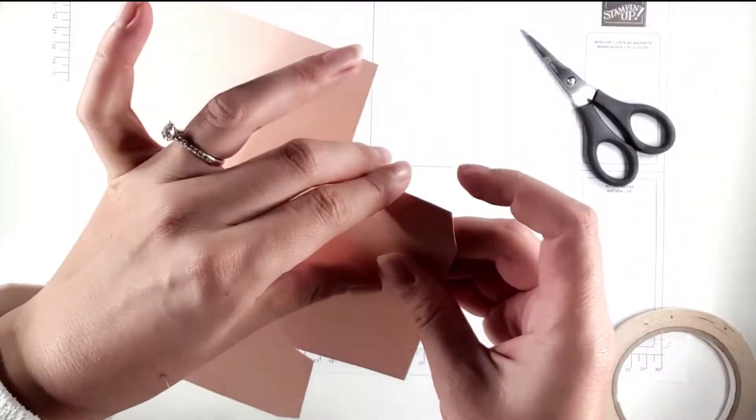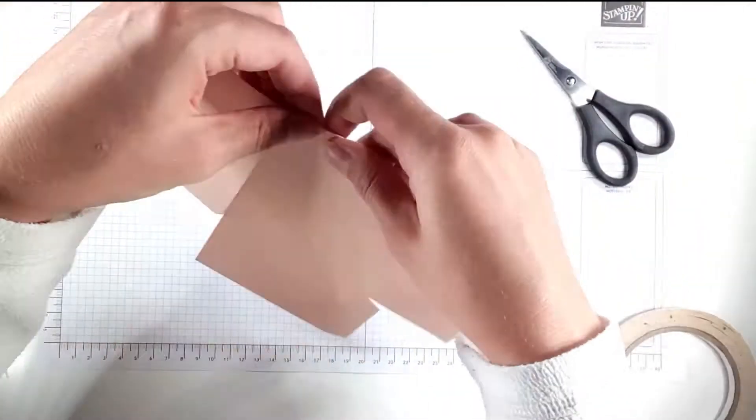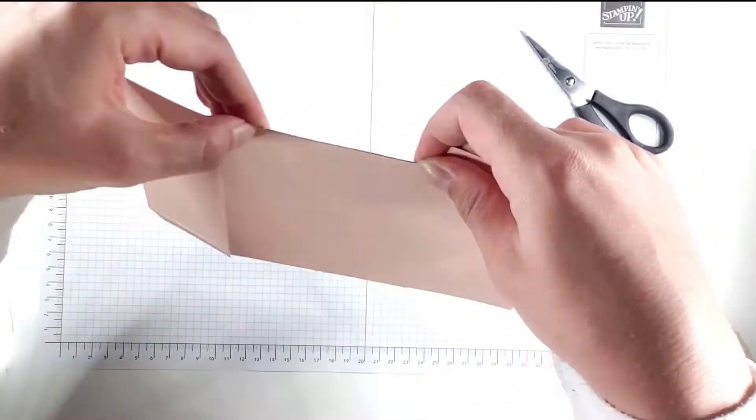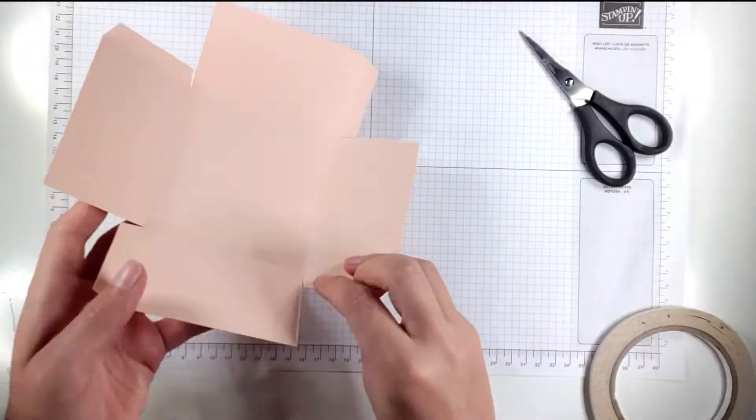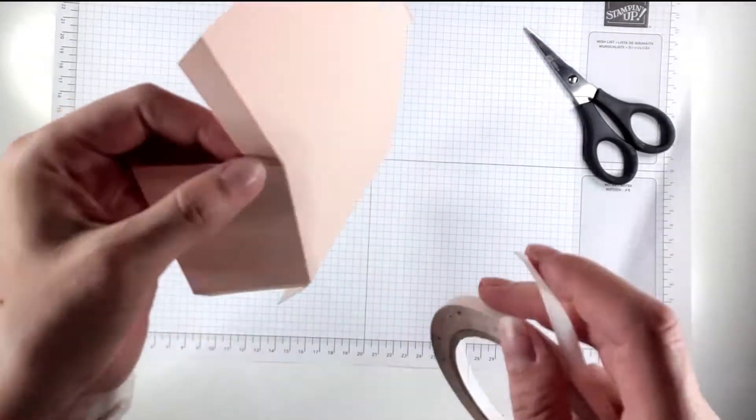Then I'm just going to fold on all of the score lines, and then I'm just going to put a bit of tear and tape on each of the flaps.